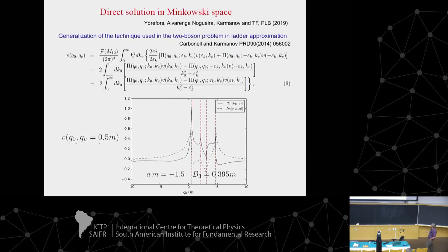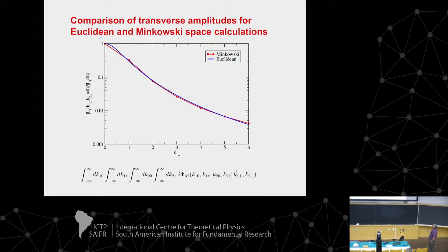We can also compute the transverse amplitudes, which are the same in both Minkowski and Euclidean space. This is the difference between the light-front case and the Bethe-Salpeter solution — we know the difference and we fix the binding energy, but even so we see a lot of difference due to the contributions of higher Fock components. We then solved the same equations fully in Minkowski space using subtractions, taking care of the principal values. This amplitude has a lot of structure with many cuts to handle, but it's doable, and this will appear in PLB.